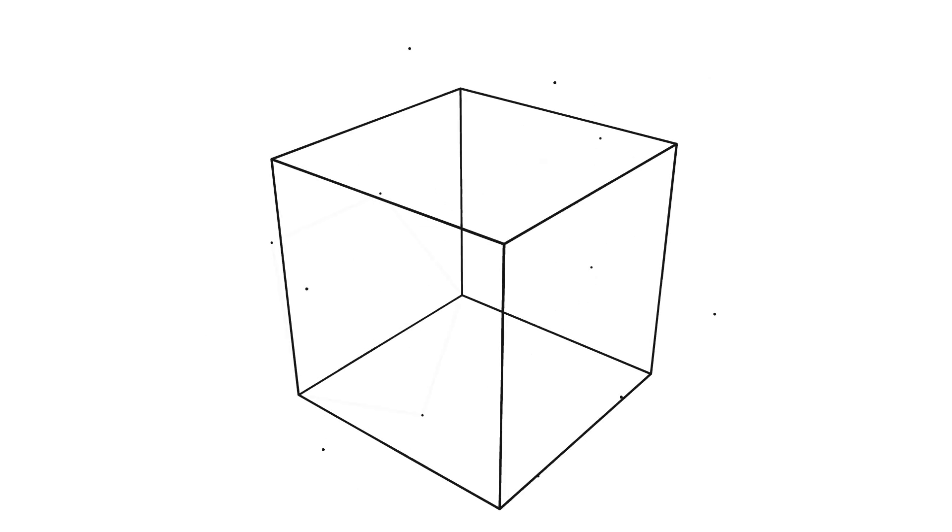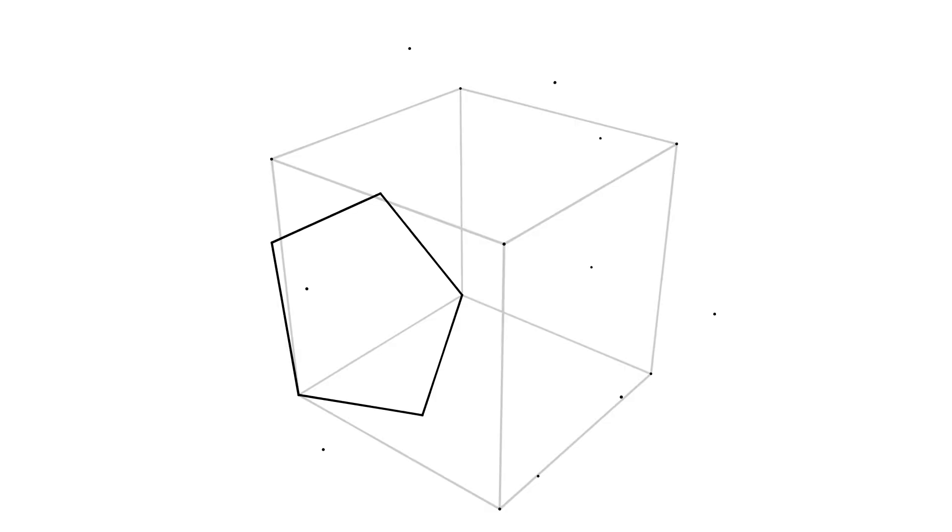So we have the golden ratio points on all sides of the cube, we can now complete the dodecahedron. As we're completing this, you can see that the pentagon faces consist of two cube vertices and three golden ratio points.